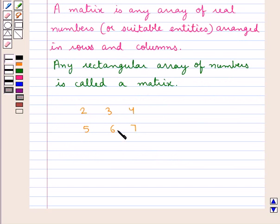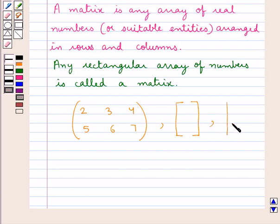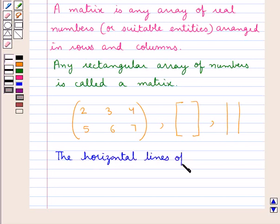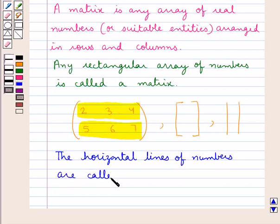This is a rectangular array of numbers — this is a matrix. We generally use large parentheses to identify a matrix, and we can even use brackets for a matrix. Double vertical bars are also used. The horizontal lines of numbers — these horizontal lines — are called rows.